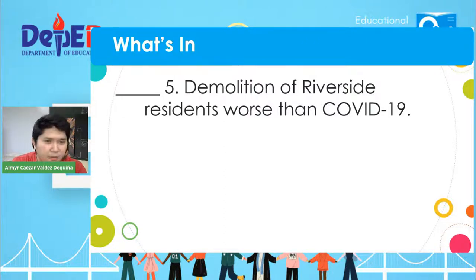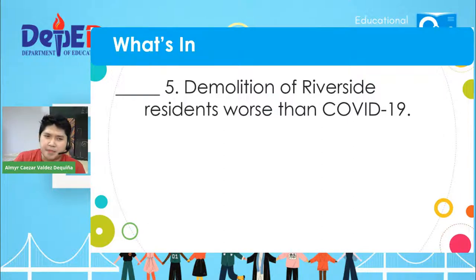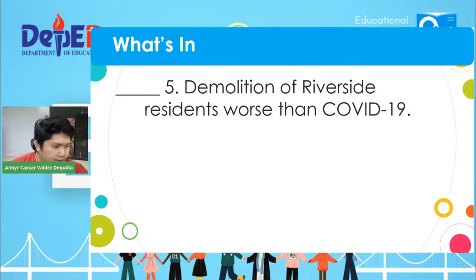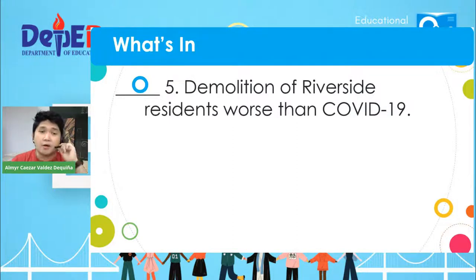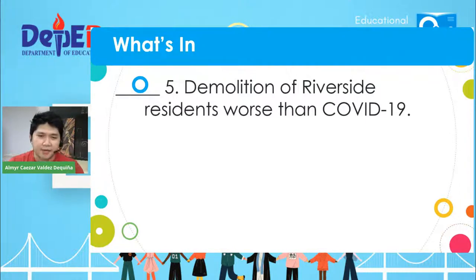And last, number five: Demolition of Riverside residents worse than COVID-19. Pag sinabi nating 'worse' — mas malala pa kaysa sa COVID-19. Martin Angel Dave says Opinion, letter O — correct. The answer is indeed letter O. Let's focus on the word 'worse' — maaaring para sa ibang residents mas malala yung COVID-19, so baka personal belief mo lang yun. The answer for number five is definitely letter O for opinion.